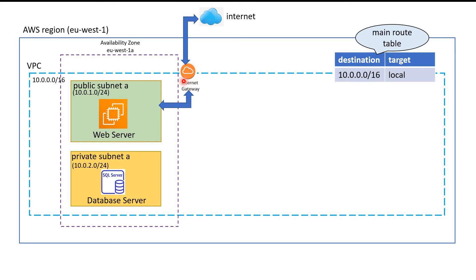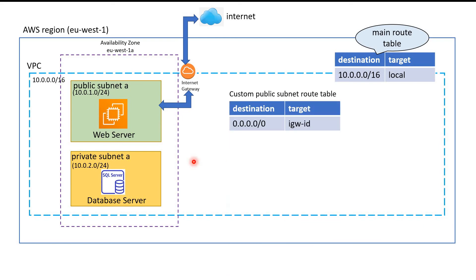We need to configure an internet gateway, which will be set up in the VPC. However, even after setting up the internet gateway, the public subnet's server still would not be able to access the internet, because the main route table is still associated with that public subnet. So we need to create a custom route table. We will create a custom public subnet route table and associate it with our public subnet. In this route table, the destination is 0.0.0.0/0, meaning all IP addresses — i.e., the internet.